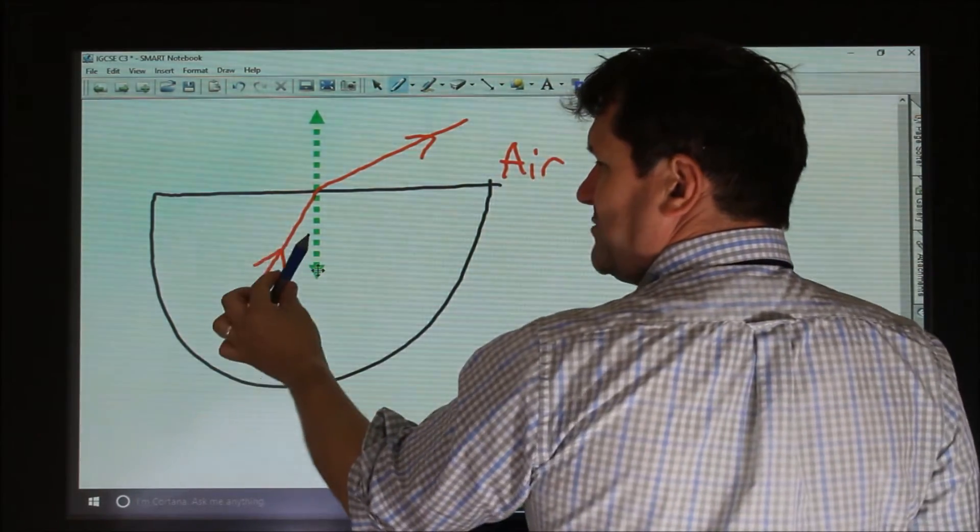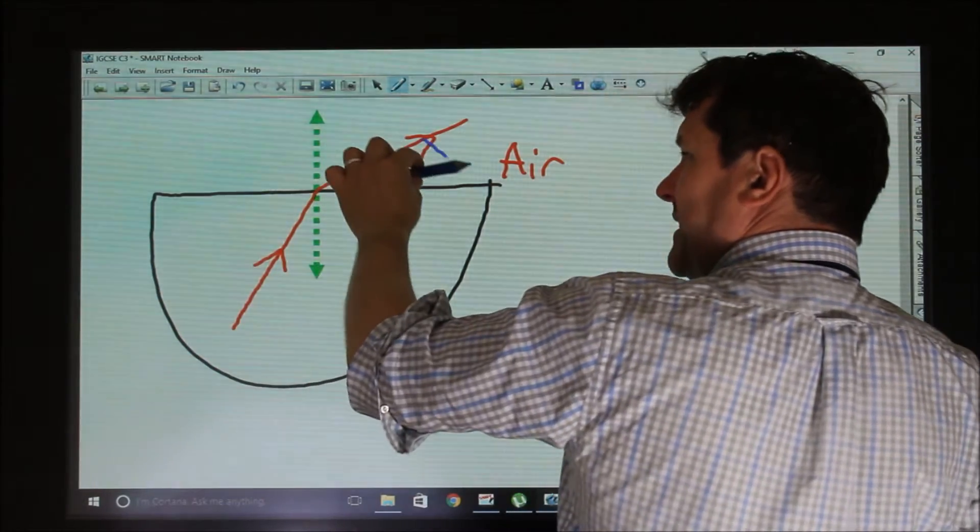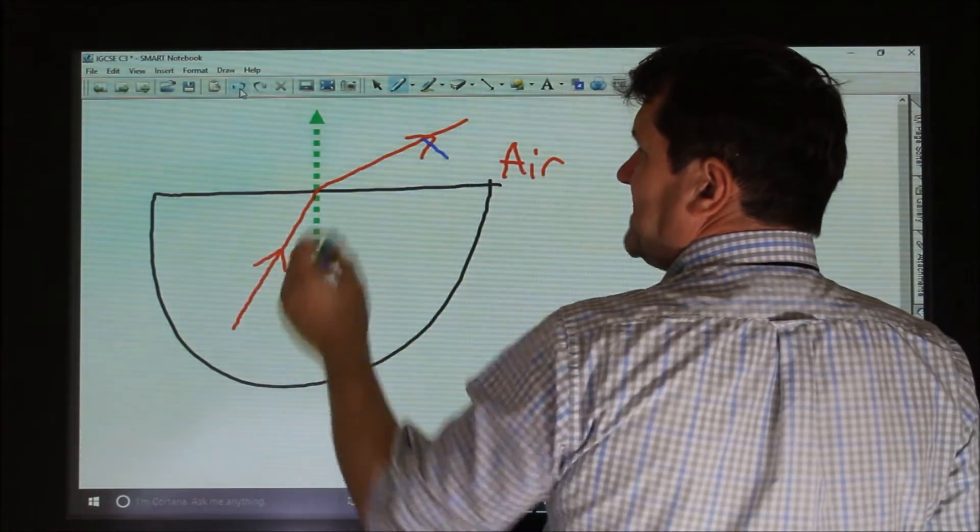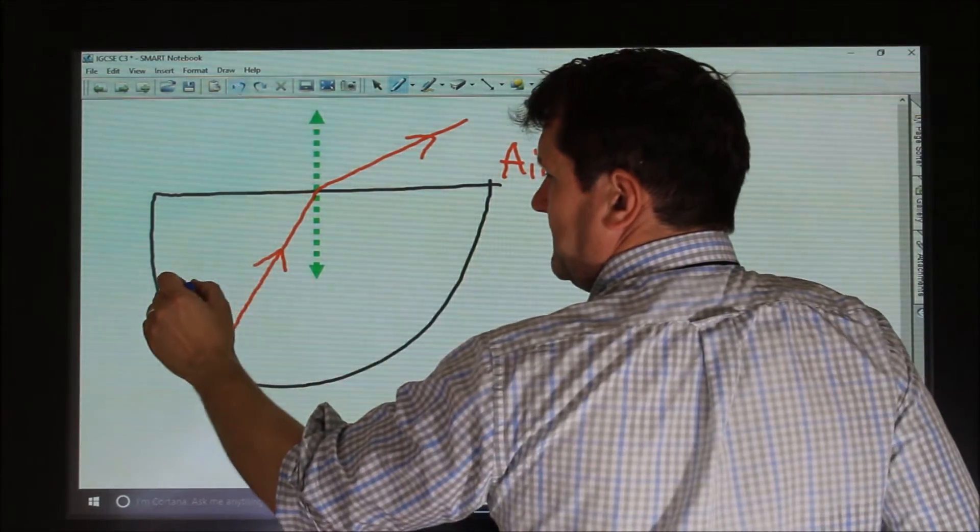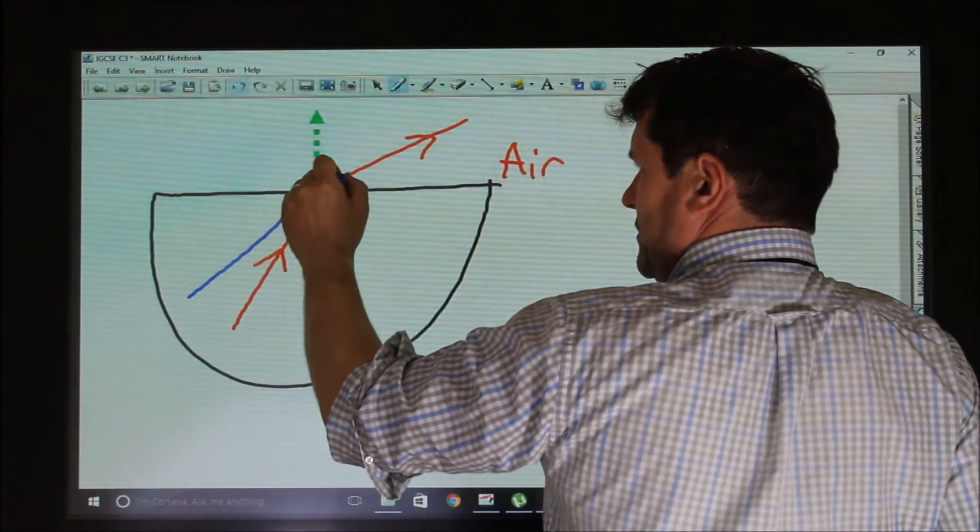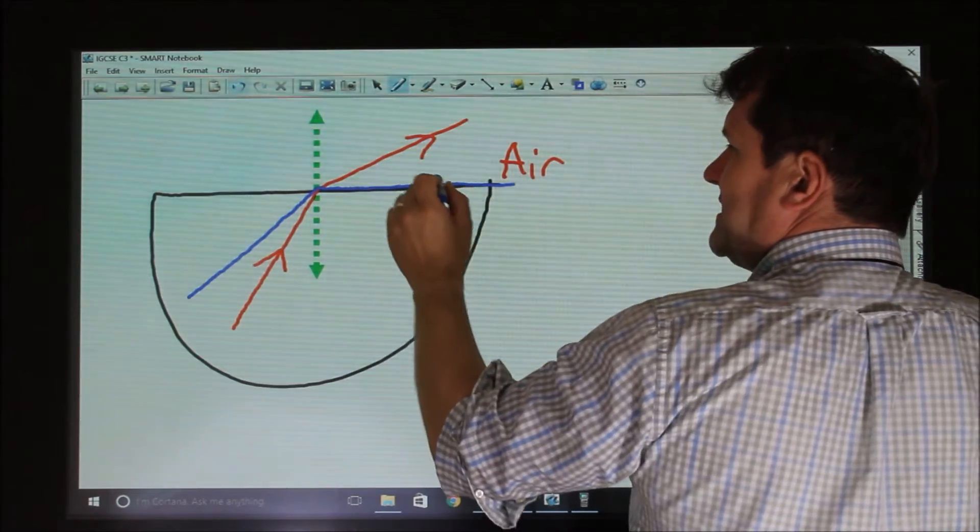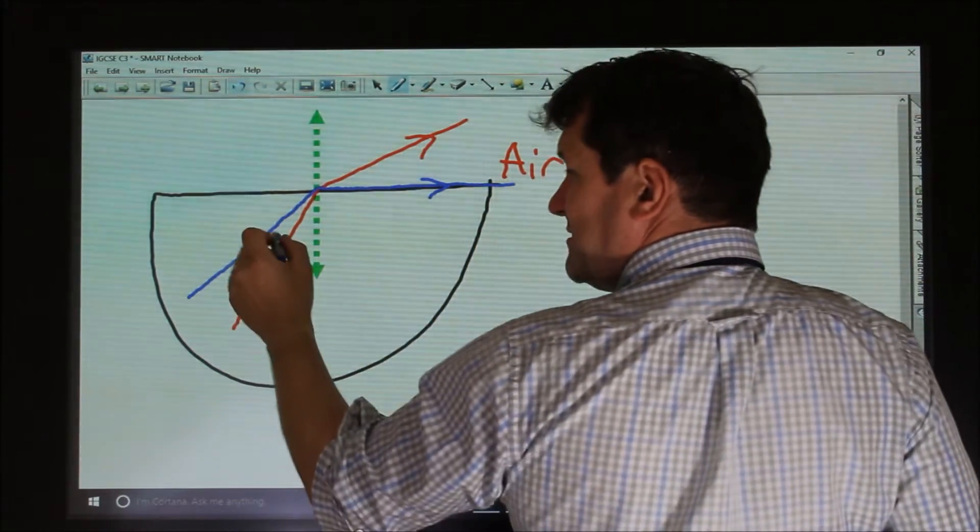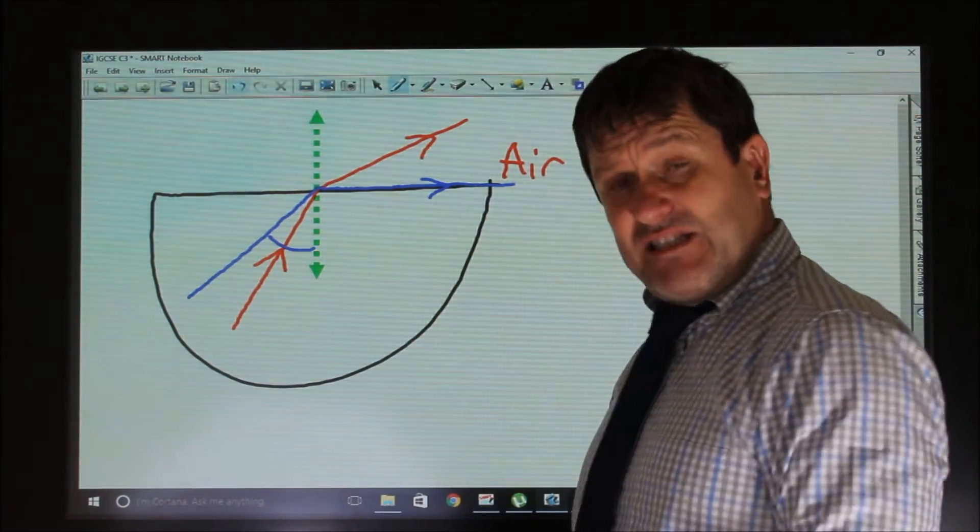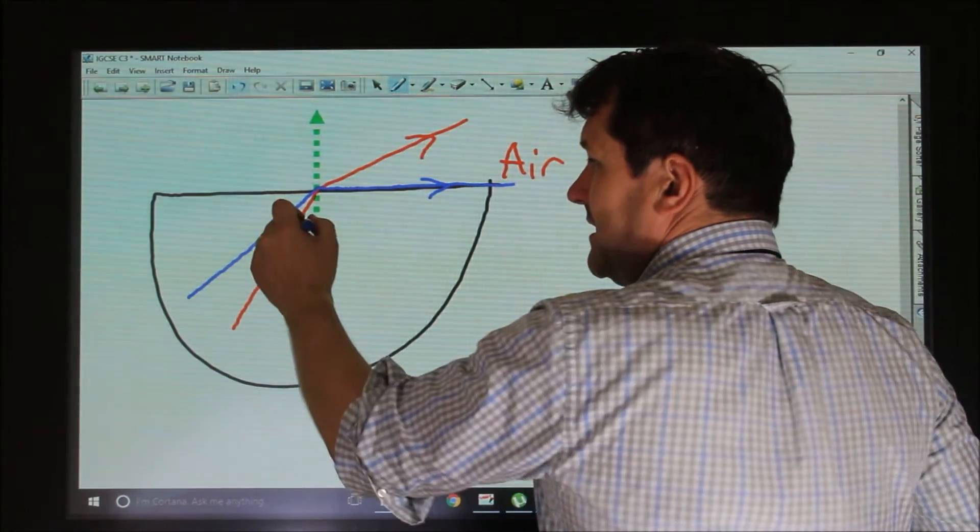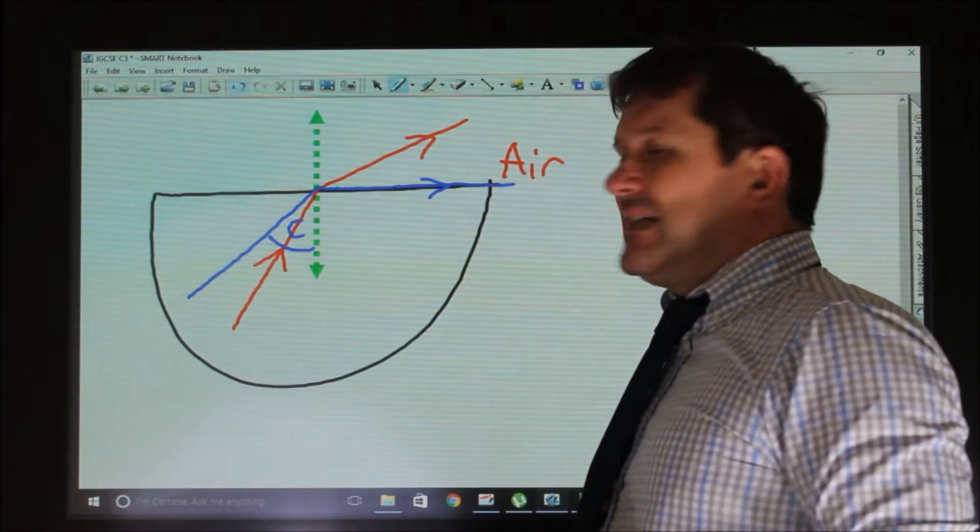Now as we move this out, this angle bends further and further. And there's an angle called the critical angle when the light will go along at 90 degrees to the plane. And this angle here is called the critical angle.